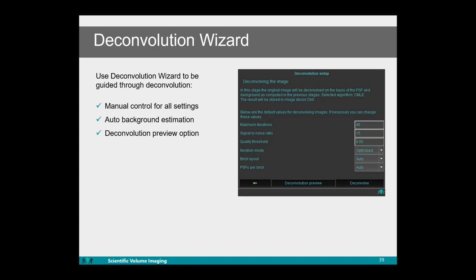In Huygens we have fully automated deconvolution in the deconvolution express, but we also offer the choice to do full manual deconvolution in the deconvolution wizard, where you have full manual control on all settings such as the maximum number of iterations, the signal-to-noise ratio, and which algorithm to use. Additionally, we have a new feature from last year — the deconvolution preview option — where you can see in a small region of interest what the effect of the various parameters are on the deconvolution of that region.